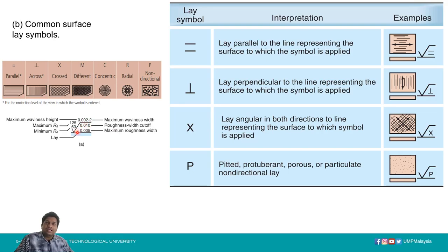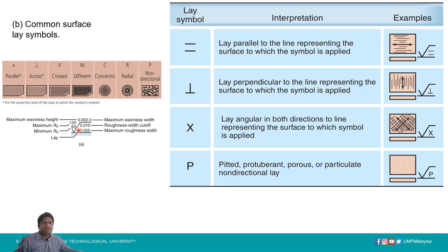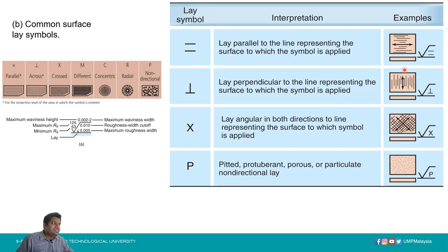On the lower right-hand mark you can see the lay direction. Symbols and meanings concerning lay are given in the lower corner. For instance, if the lay is parallel, you use an equal sign; if it is crossed, you use a perpendicular sign. There are also concentric, radial, and non-directional lay symbols.